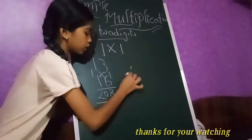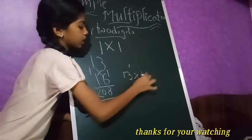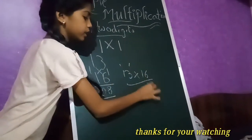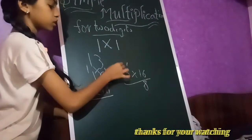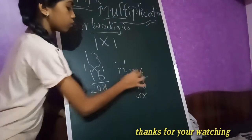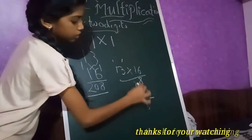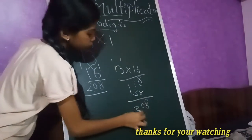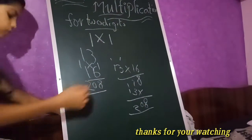Now verifications are 13 into 16. So 3 into 6 are 18, 6, 1 plus 6 plus 1, 7, 1, 3 into 1 are 3, 1, 1, 8, 10 plus 3, 10, 2. See friends, 2 0 8 is correct.